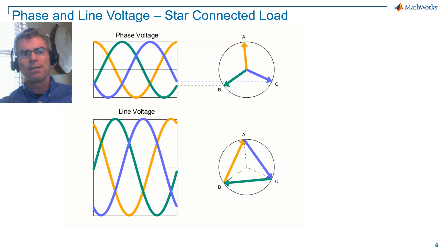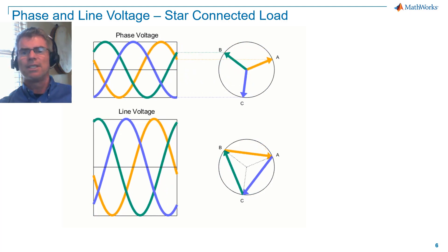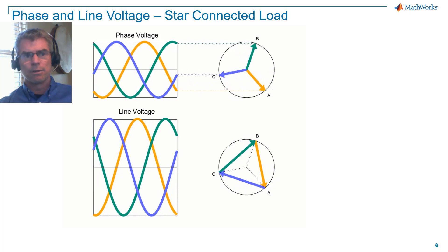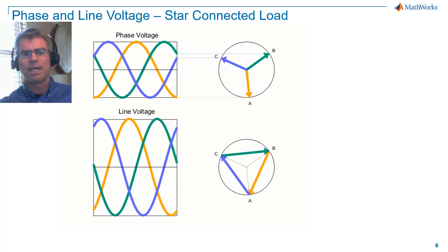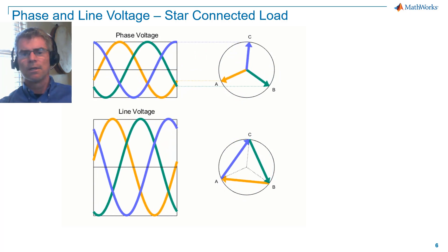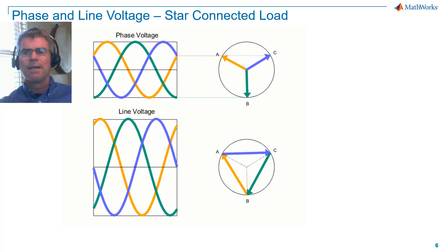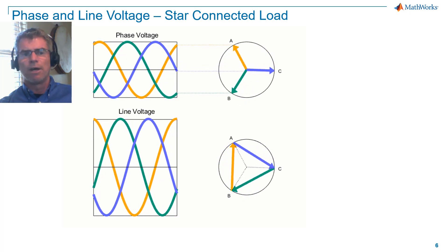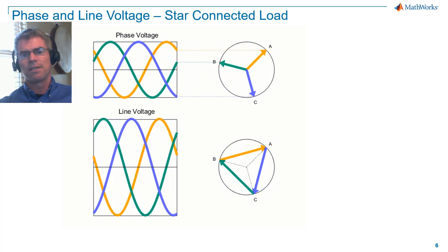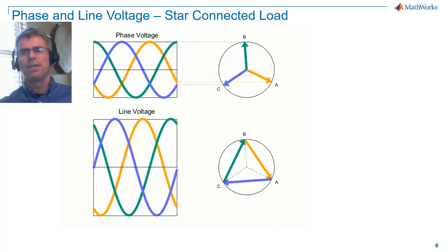The increase in magnitude is because we're now measuring across two lines. You can see that the vectors for line voltage are the correct magnitude, being square root of three times larger than the phase voltage vectors. The main difference with a line voltage measurement is that the vectors do not have a fixed reference like they do with phase voltages in a star configuration. You can see the tail end of each vector is rotating.